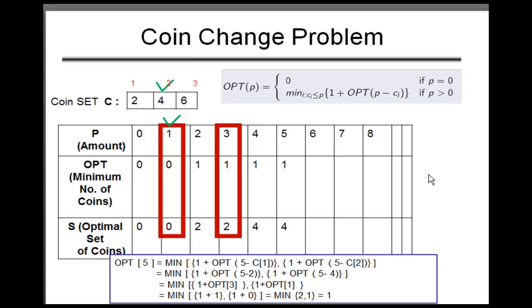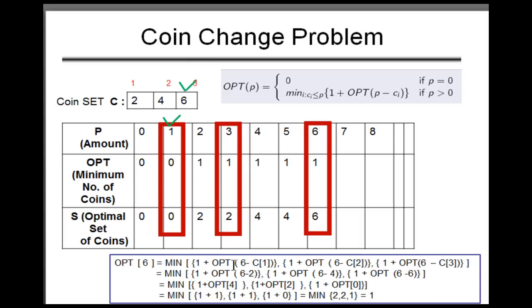Now that we have reached six, we can use all three denominations. We compute 1 + opt(6 − 2), 1 + opt(6 − 4), and 1 + opt(6 − 6). That gives 1 + opt(4), 1 + opt(2), and 1 + opt(0), which are two, two, and one. The minimum is one, so opt(6) equals one — we just give the six-dollar coin to the shopkeeper.